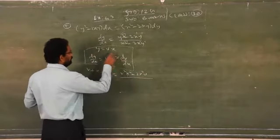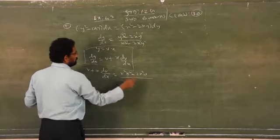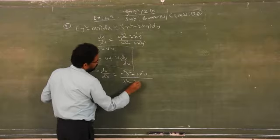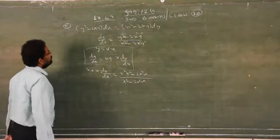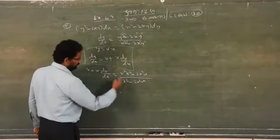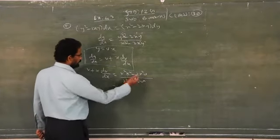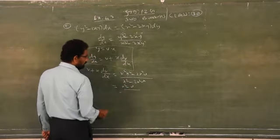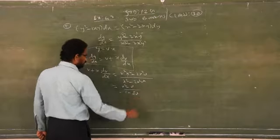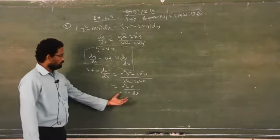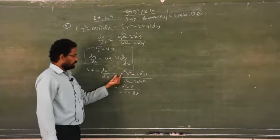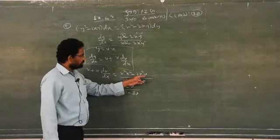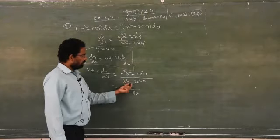I am straight away multiplying: x into x² gives x³, and this v as it is. Similarly, the denominator: x² minus 2x²v. x² is the common factor of both numerator and denominator. When you take it outside and eliminate, you will get v² minus v over 1 minus 2v. After taking x² as common factor and applying cancellation, you get (v² minus 2v) over (1 minus 2v).